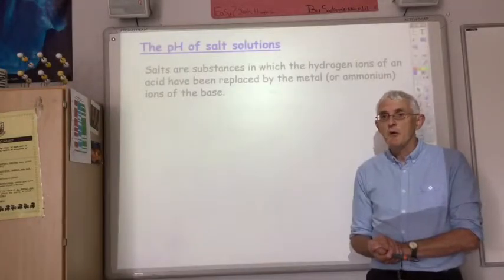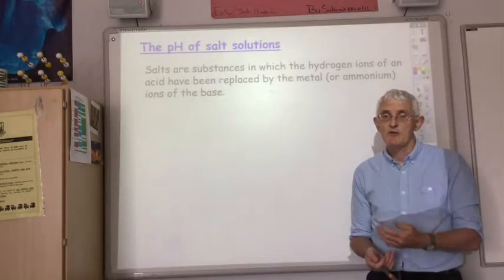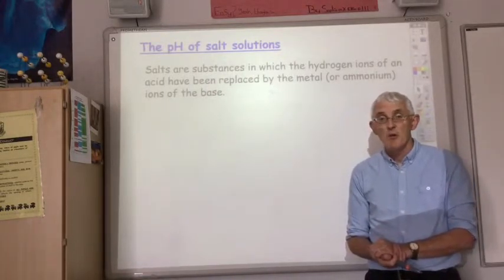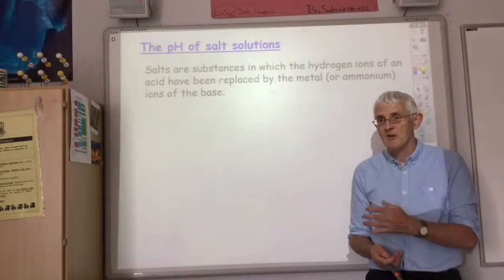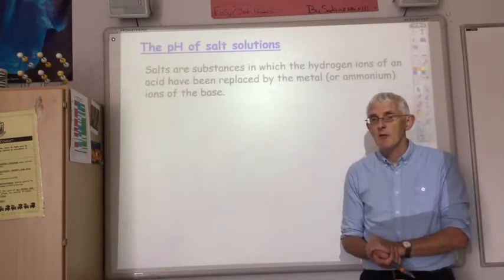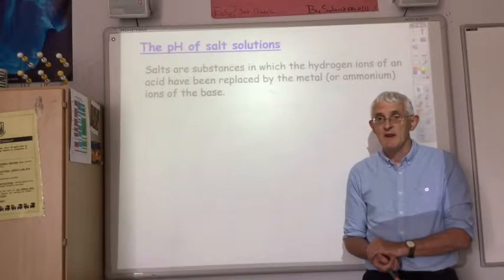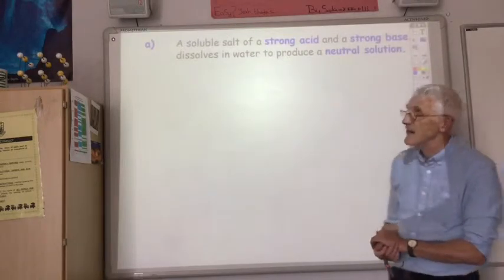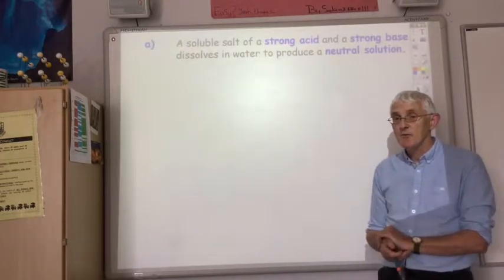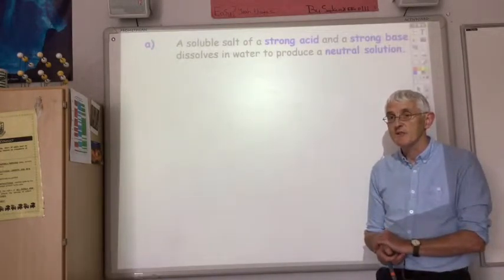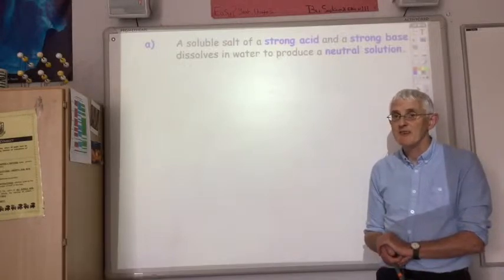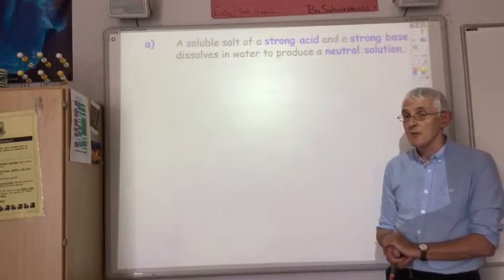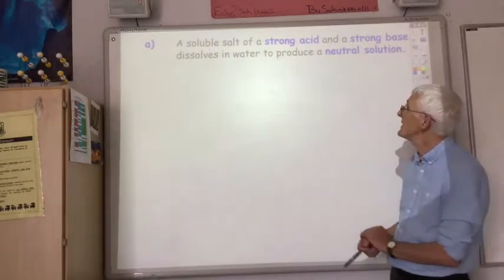So how do we know if our soluble salt is going to produce an acidic solution, a neutral solution, or an alkaline solution? There are a few simple rules that can allow you to accurately predict whether or not the pH will be acidic, alkaline, or neutral. The first rule tells you that if the soluble salt has been produced by a strong acid neutralised by a strong base, then the resulting salt, if soluble, will produce a neutral solution when it dissolves in water.